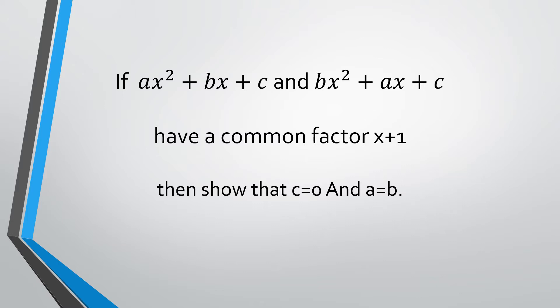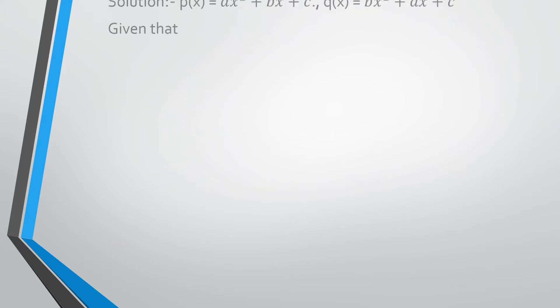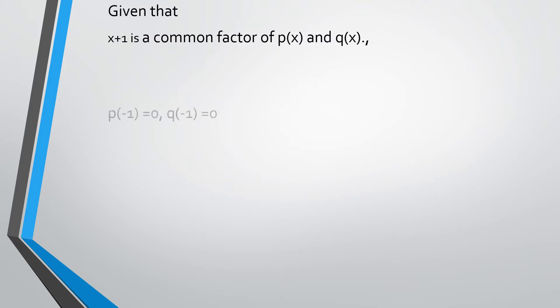The problem has two polynomials assigned as p of x and q of x, which have a common factor x plus 1. We need to find the zero of the polynomial based upon the given common factor x plus 1. The zero of x plus 1 is equal to minus 1, since x plus 1 equals 0 gives x equals minus 1.